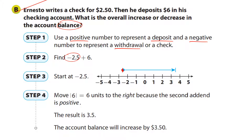Starting at negative 2.5, move six units to the right: one, two, three, four, five, six — you end up at 3.5. That point is 3.5, meaning the balance in the account is now three dollars and fifty cents.